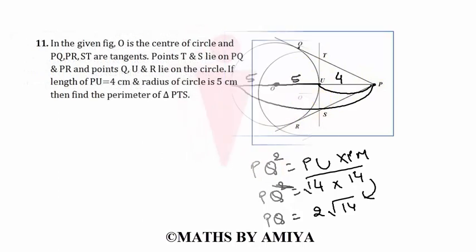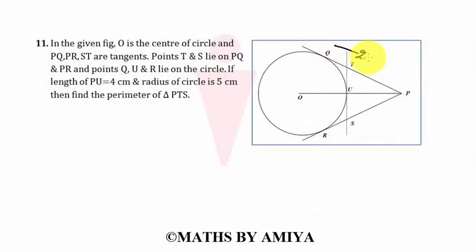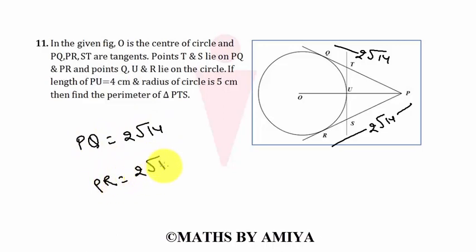But we have to find perimeter of PTS. Now apply the second concept. So we have PQ is equal to 2 root 14 and PR is equal to 2 root 14. We know the value of PQ is 2 root 14 and the value of PR is again 2 root 14.